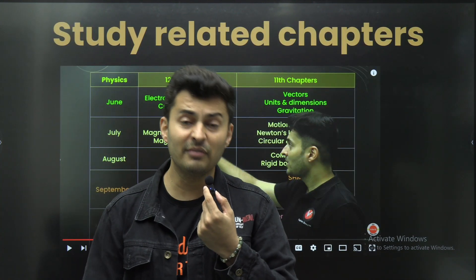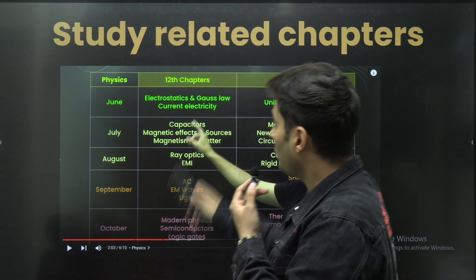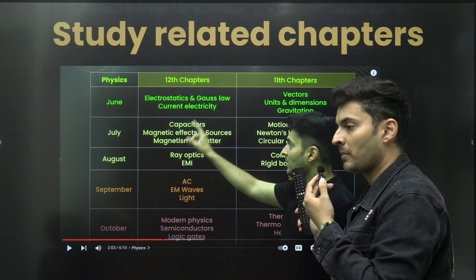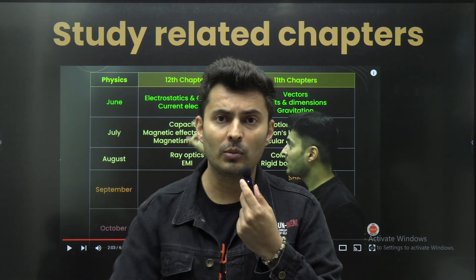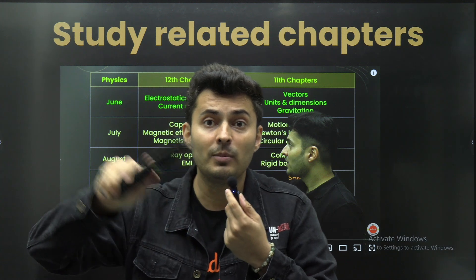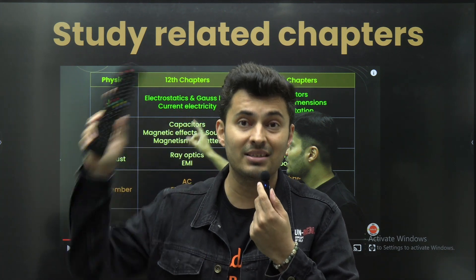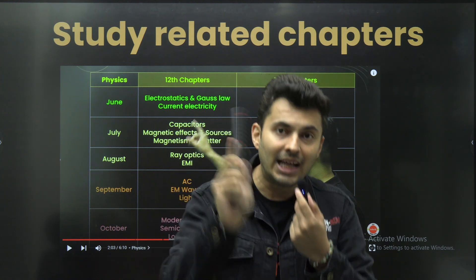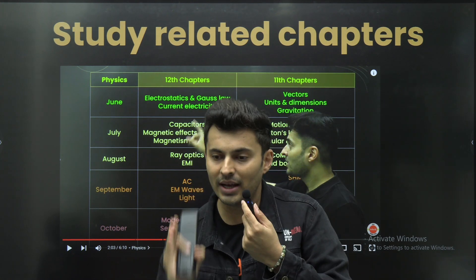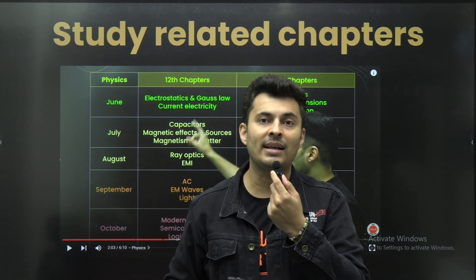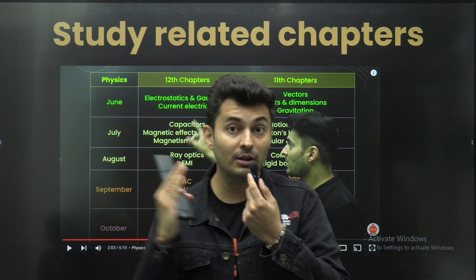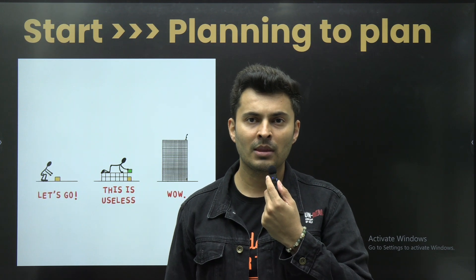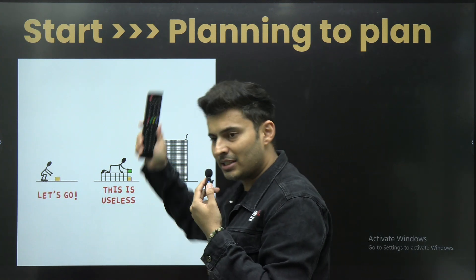I'm going to make a separate video where I'll give you a complete list of topics from 11th and 12th which you can study together. I've almost finished that recording and will be uploading it very soon — covering all chapters not just for physics but also chemistry and biology. Certain chapters studied together can be covered quickly. That is the video you should be looking for: how to efficiently plan, a month-wise plan, which chapter to study with which chapter.